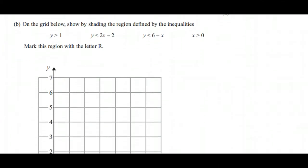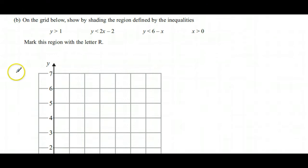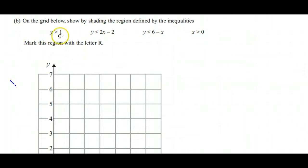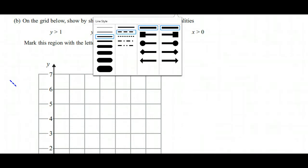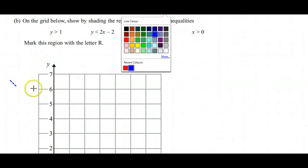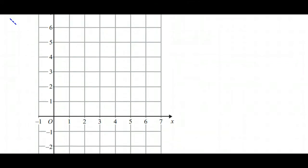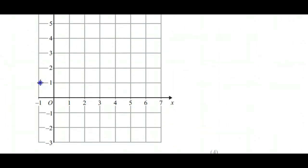Okay, if we move on to the graphing question. On the grid below, show by shading the region defined by these inequalities. First thing to do is draw the equations of those lines. We've got y > 1, so using the dotted line. The line y = 1 would be a horizontal line that goes through every point where the y-coordinate is 1. I've made it dotted because it doesn't include those values.